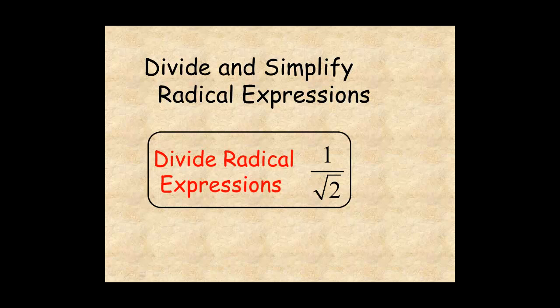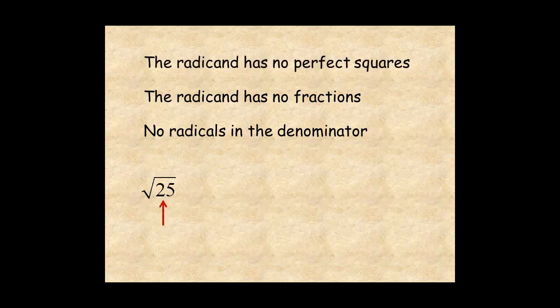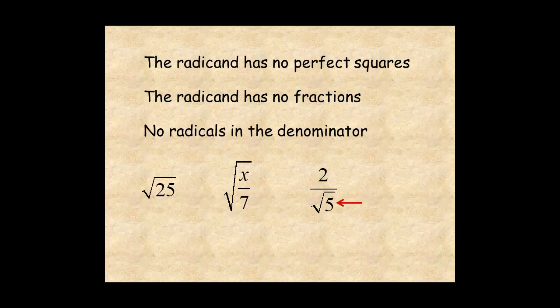This lesson shows you how to divide and simplify radical expressions. A radical expression is simplified when the following statements are true: the radicand has no perfect squares, the radicand has no fractions, and there are no radicals in the denominator. For this lesson, we'll concentrate on fractions in the radicand and radicals in the denominator.